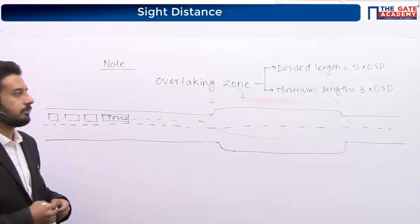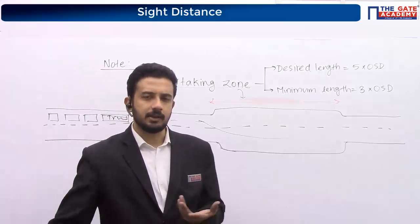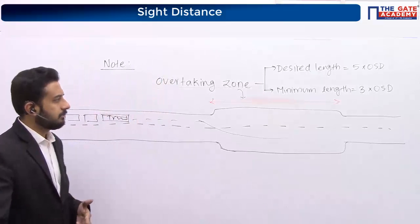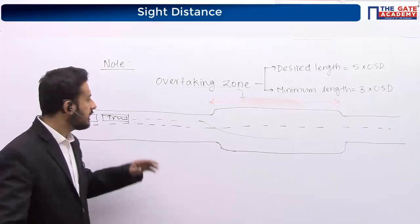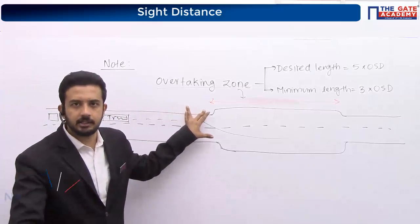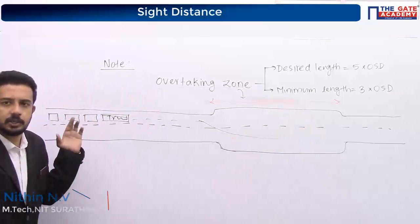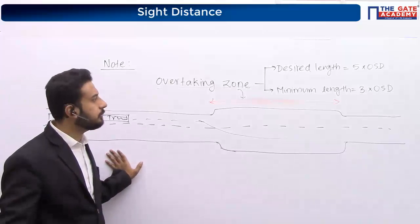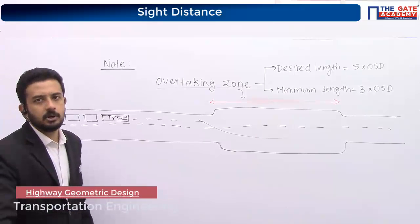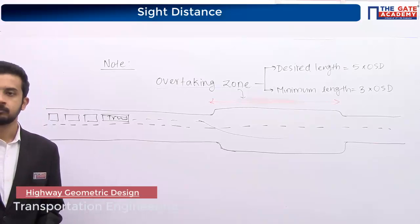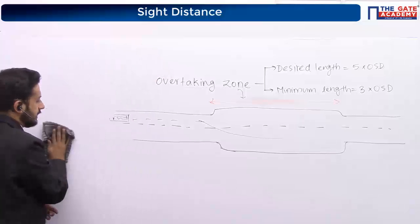It is a theory portion — remember it. Remember what is the overtaking zone. Maybe they will give some definition and ask you what it is. As of now nothing specific, but we don't know what they are going to ask in the exam. Desirable length is 5 times OSD because everyone is waiting for their chance to overtake. So you have to give something more than the required OSD of a particular vehicle. The minimum length is 3 times the overtaking sight distance.